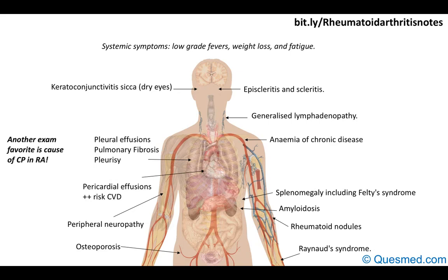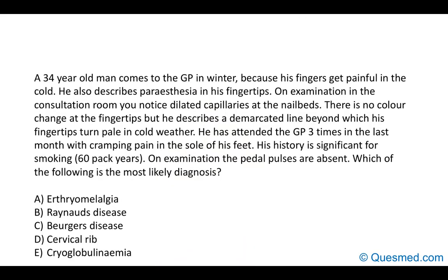Peripheral neuropathy is important, including mononeuritis multiplex where different nerve lesions occur independently in different parts of the body, causing sensory disturbance. Rheumatoid arthritis can also cause osteoporosis, so bisphosphonates may be warranted to prevent complications such as hip fractures, which can lead to further complications.